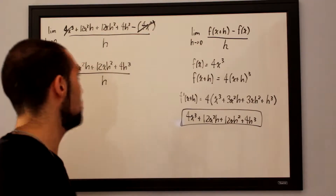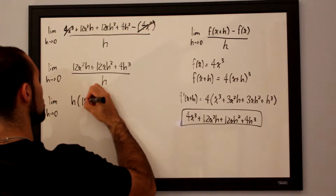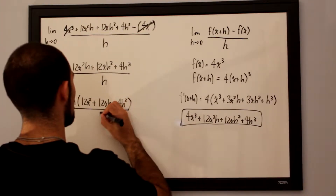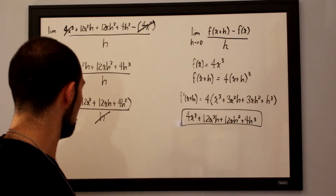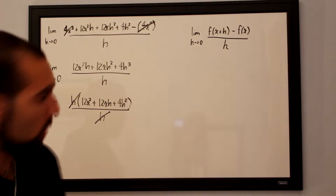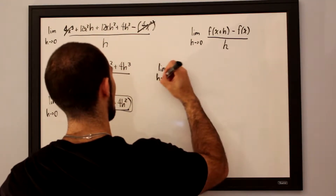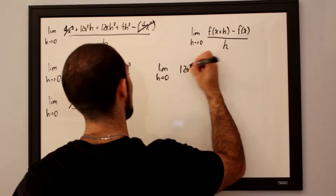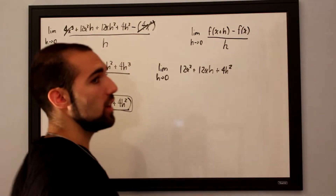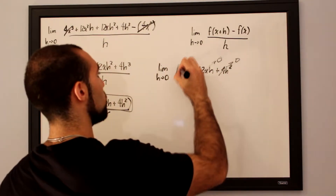We can factor an h out of the numerator, giving us h times 12x squared plus 12xh plus 4h squared, all over h. Cancelling the h in the numerator and denominator, we take the limit as h approaches 0 for 12x squared plus 12xh plus 4h squared. Anything multiplied by h will disappear as h approaches 0, so the 12xh and 4h squared terms both go to 0, leaving us with 12x squared.